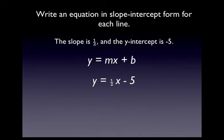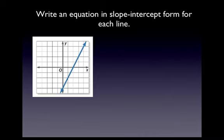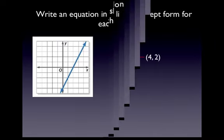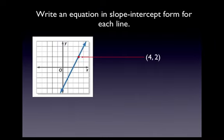Alright, let's try something a little more complicated. In this case, we're just given a graph, and we need to come up with an equation in slope-intercept form for this line. So we have a point at 2, 0. We have a point at 1, negative 2, and we have a point at 0, negative 4.